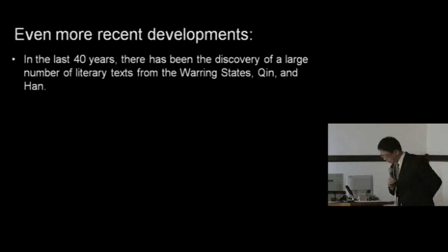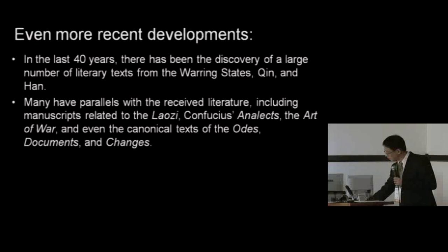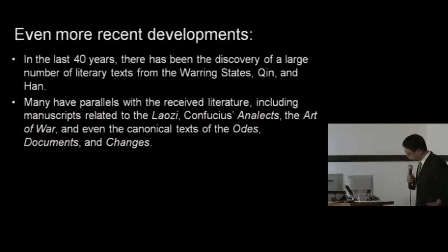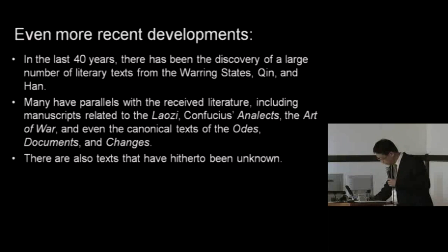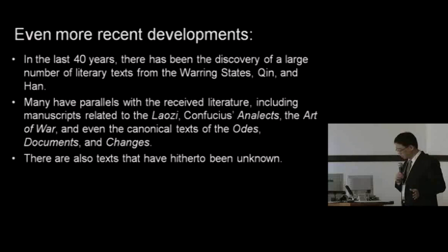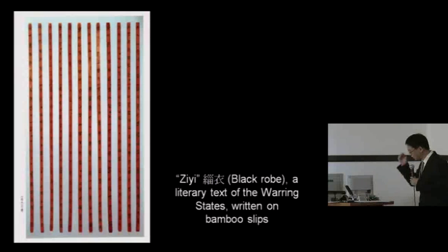A further development in the last 40 years is the discovery of a large number of literary texts from the Warring States, Qin, and Han. Many of these have parallels with the received literature — so there are manuscripts related to the Laozi, the Confucian Analects, the Art of War (Sun Zi Bingfa), and even the canonical texts of the Odes, the Documents, and the Yi Jing, the Book of Changes. And then there are also texts that, up to this point, have been unknown. All of these have added significantly to our understanding of the ancient world, and they can be approached from the perspectives of language, intellectual thought, social and political reality, and other aspects of ancient history.